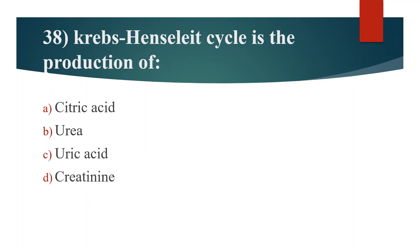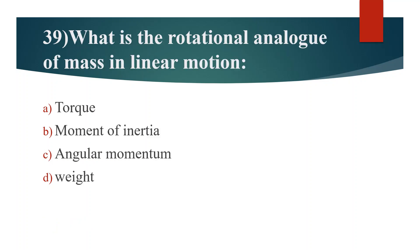Thirty-eighth question. Krebs-Henseleit cycle is the production of? Option A: Citric acid. Option B: Urea. Option C: Uric acid. Option D: Creatinine. Answer is Option B: Urea.